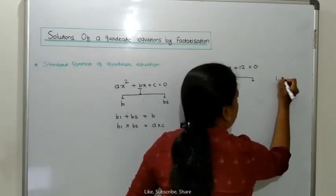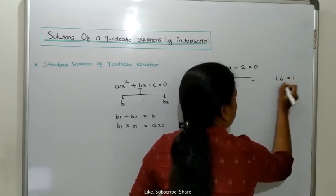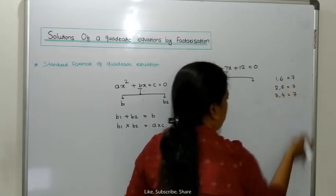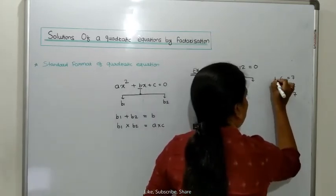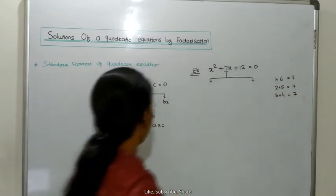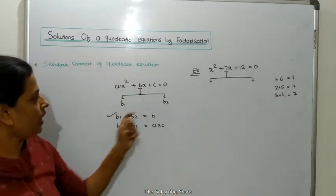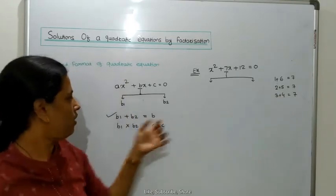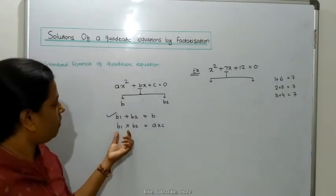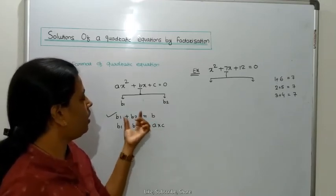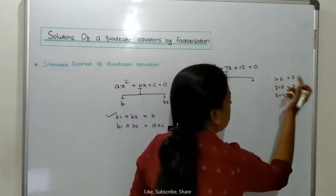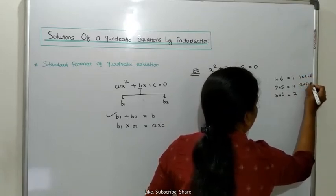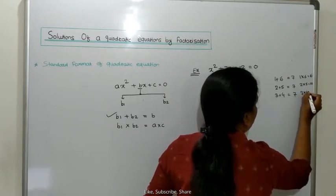When we add 1 and 6, we get 7. When we add 2 and 5, we get 7. When we add 3 and 4, we get 7. We check the first condition — addition only. Then for the second condition, when we multiply: 1 into 6 is 6, 2 into 5 is 10, and 3 into 4 is 12.